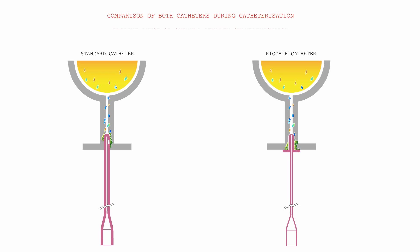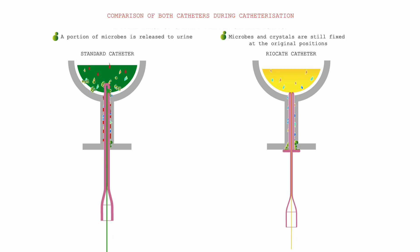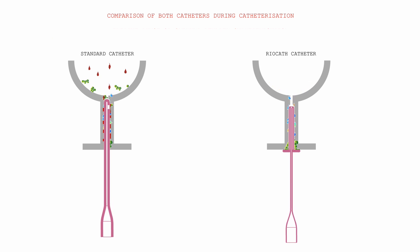Now we can compare both catheters during catheterization simultaneously. On the left you can see that the standard catheter is causing small injuries inside the urethra and transporting microbes into the bladder. On the right side, with the Ryocath catheter, everything stays in its original place.